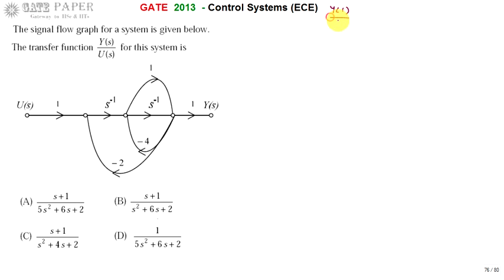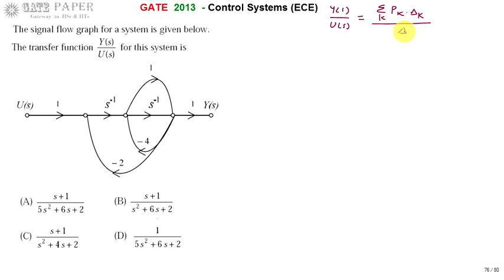Mason's Gain Formula gives the transfer function as Y(s) divided by U(s), which equals Sigma P_K into Delta_K, where K is the number of forward paths, divided by Delta.